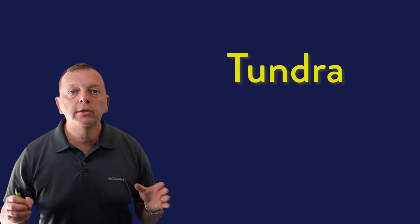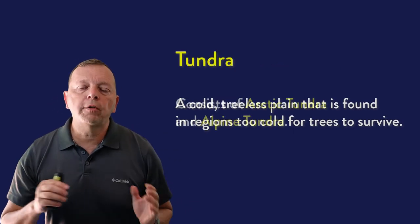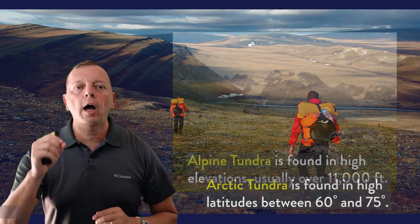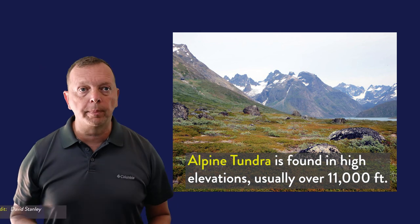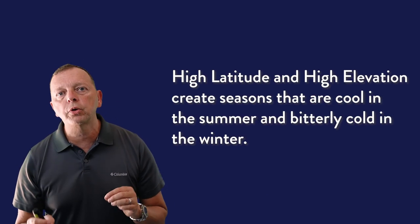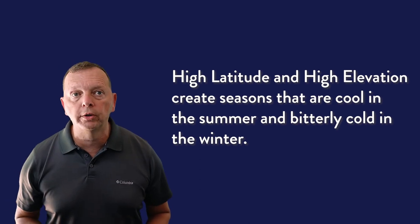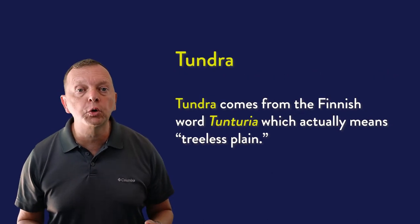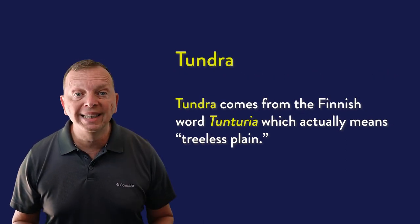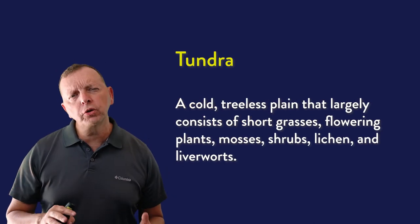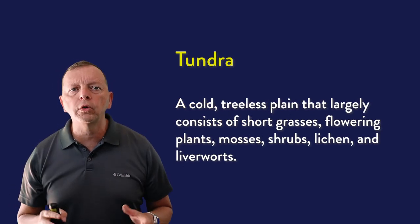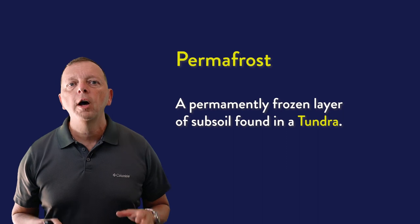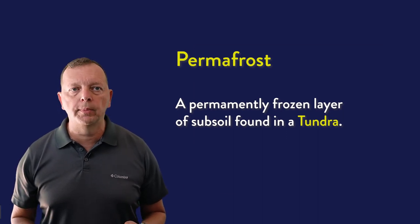Our last major biome category is the tundra, which is the coldest of all biomes. We have arctic and alpine tundras — arctic tundras are found in high-latitude areas, and alpine tundras are found in high-elevation areas up in the mountains. In both, temperatures are at best cool in the summers and brutally cold in the winters. It is so cold that you won't find trees in the tundra — in fact, the word tundra comes from a Finnish word that literally means treeless plain. Vegetation is largely limited to low shrubs, mosses, liverworts, flowers, and short grasses. One unique feature of the arctic tundra is permafrost — a layer of permanently frozen subsoil.